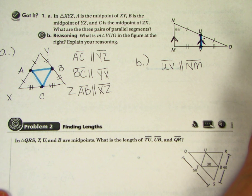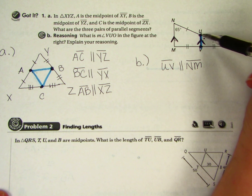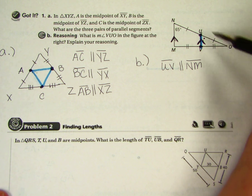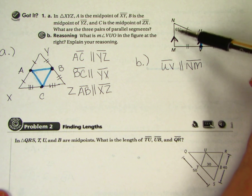If I look with my parallel lines, the measure of V, U, O would be congruent to the measure of M, N, O because these angles are corresponding angles.